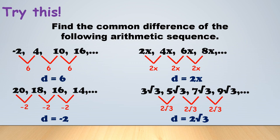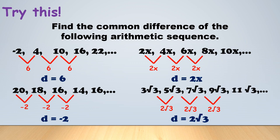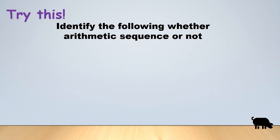For the first sequence, the next term is 22 — simply add 6 to 16. For the descending sequence, add -2 to 14 to get 12. For the variable sequence, the next term is 10x. For the surd sequence, the next term is 11√3. You can also use the common difference to identify whether a sequence is arithmetic or not.